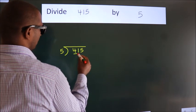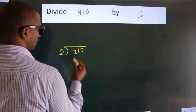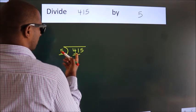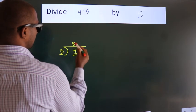Here we have 4, here 5. 4 is smaller than 5, so we should take 2 numbers: 41. A number close to 41 in the 5 table is 5 times 8 equals 40.